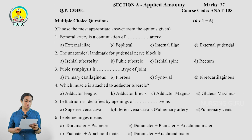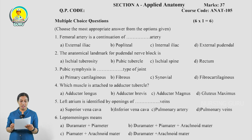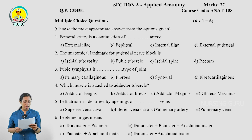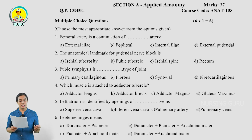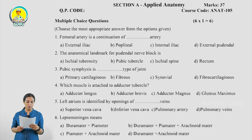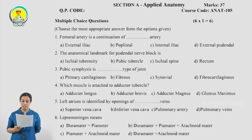The first question in Applied Anatomy is an MCQ: 'Femoral artery is the continuation of dash artery.' The four options are: A — External iliac, B — Popliteal, C — Internal iliac, D — External pudendal. The answer is A, External iliac. The second question: 'The anatomical landmark for pudendal nerve block is...' — the answer is option C, Ischial spine. The third question: 'Pubic symphysis is a dash type of joint.' The options are: A — Primary cartilaginous, B — Fibrous, C — Synovial, D — Fibrocartilaginous. The answer is D, Fibrocartilaginous. There are 6 MCQ questions in total.